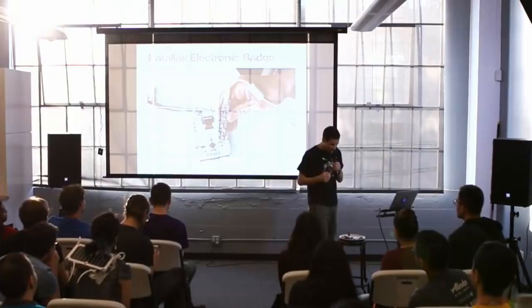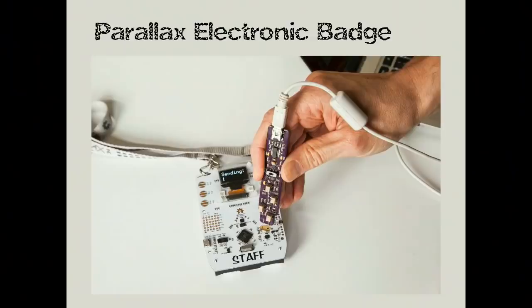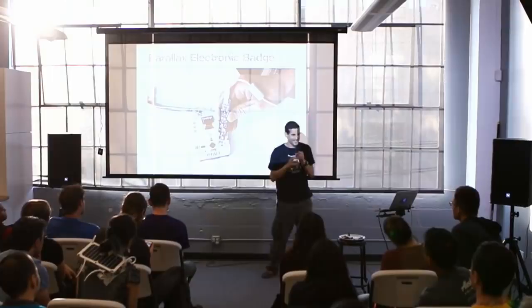Demos! The first demo I'm going to show you is using a Parallax electronic badge — a little hackable badge that Parallax made. They're a great company that does hobbyist robotics and electronics. They've made these as hackable badges for conferences. It has an infrared LED on it — no visual indication, but it's still sending data. Because it's infrared, we can't see it, but our photodiode can. I actually use this during production to test the badges, because it was an easy way to write some code that transmits through the infrared LED and then capture and verify it's working.